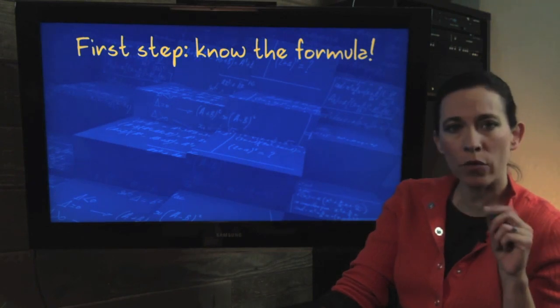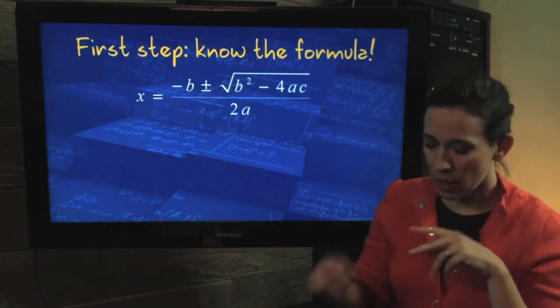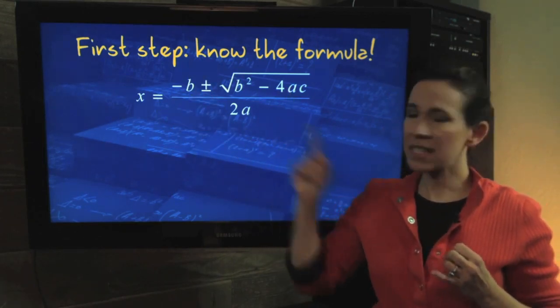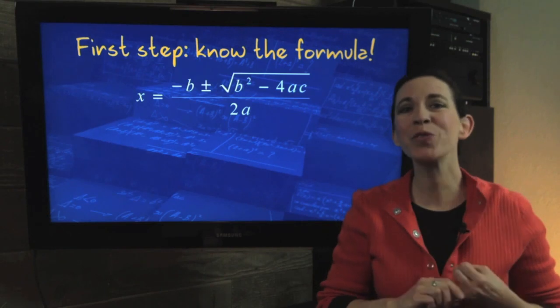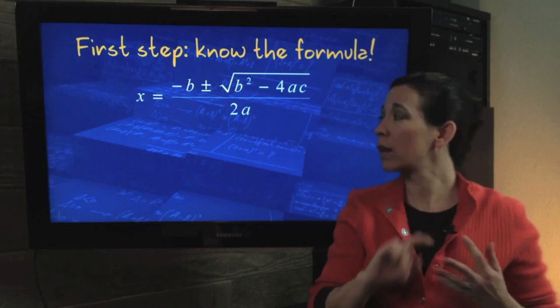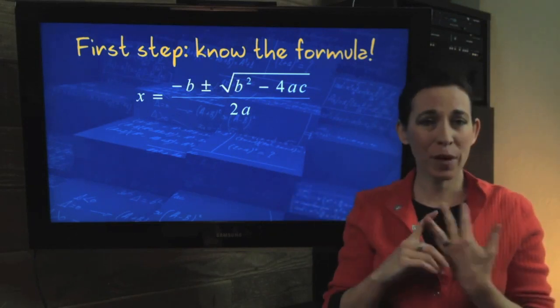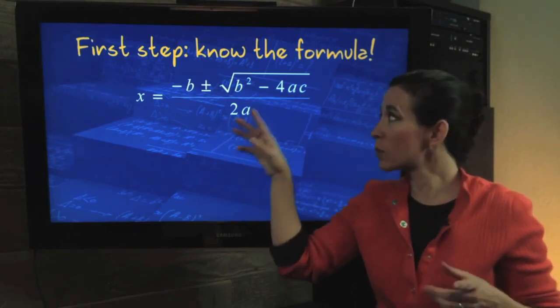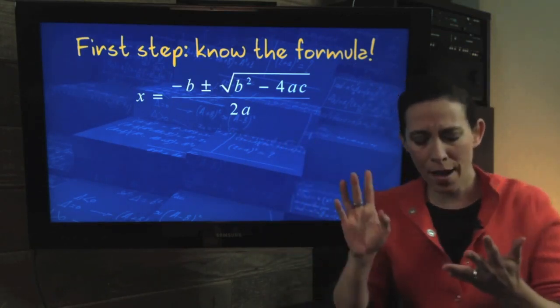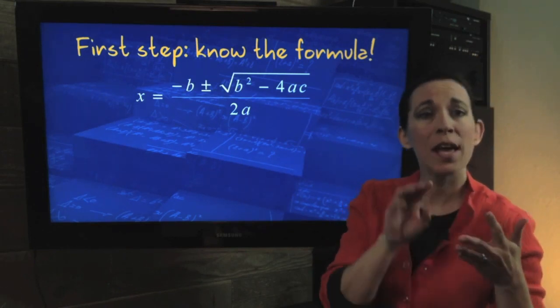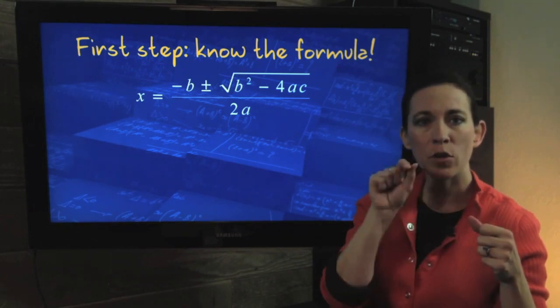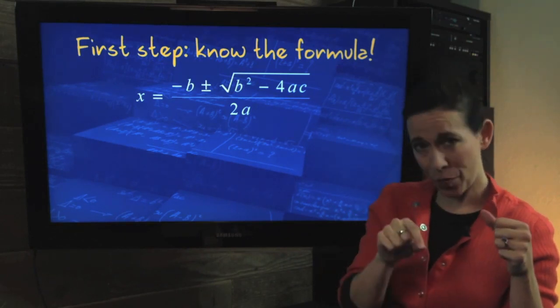So your first step, know the formula. You can make up a story about what b and a and c stand for. You can sing it to pop goes the weasel, which I'm not going to attempt right now, but it's public domain so I could. You could sing it: x equals opposite b plus or minus square root b squared minus 4ac all over 2a. Sounds silly, but it works.